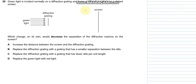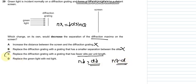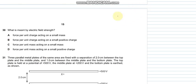Question number 29 says that green light is incident normally on a diffraction grating. Which change would decrease the separation of the diffraction maxima on the screen? n lambda equals d sin theta. We need to see what would decrease the distance. Replacing the diffraction grating with fewer slits per length would decrease n, so that would decrease d as they are proportional. So C is the appropriate answer.